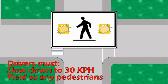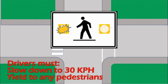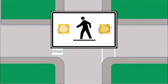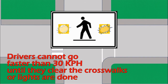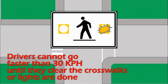Some crosswalks might be controlled by crosswalk lights, also known as signals. When the crosswalk lights are on, drivers must slow down to 30 kilometers per hour and yield to any pedestrians inside the crosswalks. And even if it is obvious that the pedestrians are done crossing, drivers are not allowed to go any faster than 30 kilometers per hour until they've either passed the crosswalk or the crosswalk lights are done flashing.